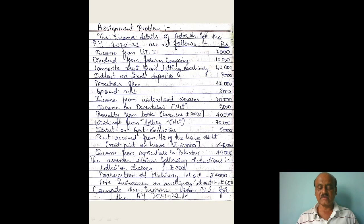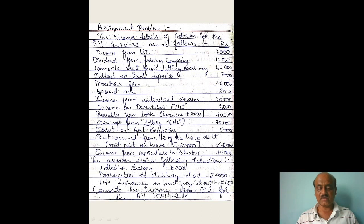Assessee claims the following deductions: collection charges (deductible), depreciation on machinery let out under Section 57, fire insurance on machinery let out — these are allowable expenses. Compute income from other sources for assessment year 2021-22.